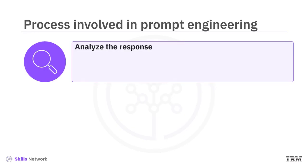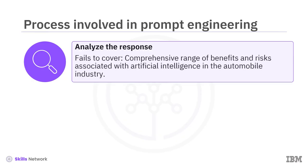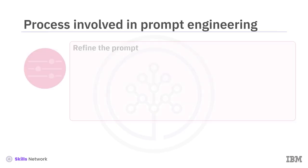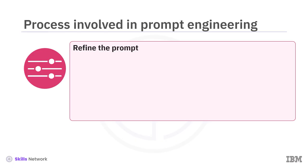Step 4: Analyze the response. You must carefully review the response and examine whether it aligns with your goals. If not, make a note of the areas where it fell short. For example, the initial prompt used fails to cover a comprehensive range of benefits and risks associated with artificial intelligence in the automobile industry.